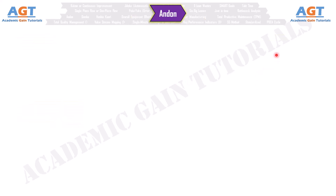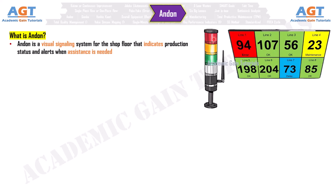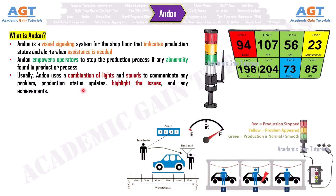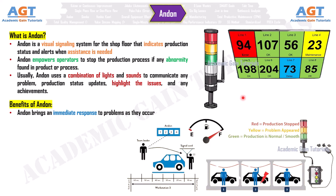Number 14: Andon. Andon is a visual signaling system for the shop floor that indicates production status and alerts when assistance is needed. Andon empowers operators to stop the production process if any abnormality is found in product or process. Usually, Andon uses a combination of lights and sounds to communicate problems, production status updates, highlight issues, and any achievements. Benefits: Andon brings an immediate response to problems, empowers operators, and keeps shop floor personnel engaged with their tasks.